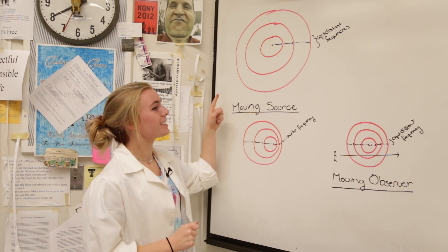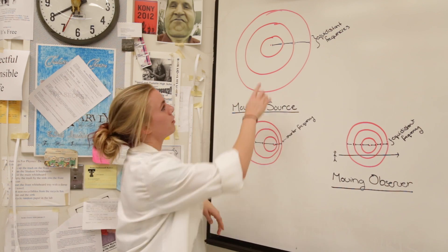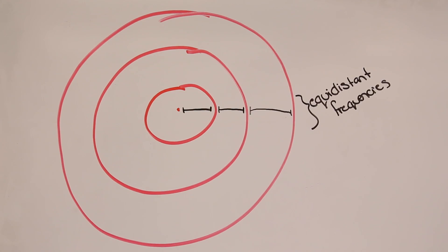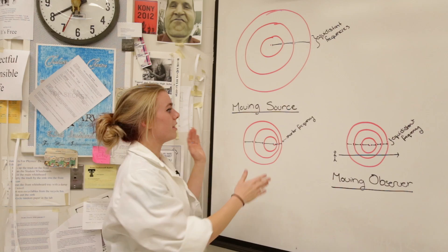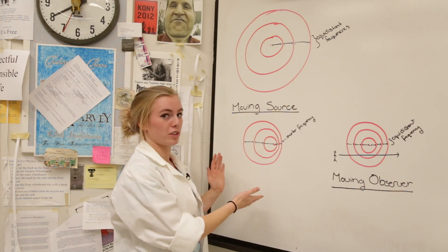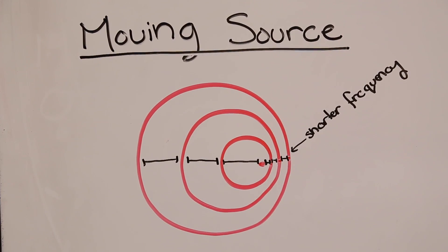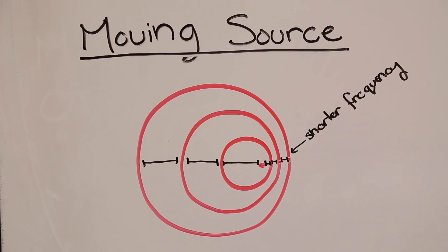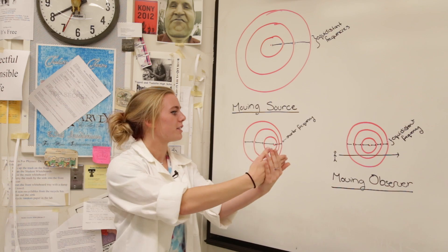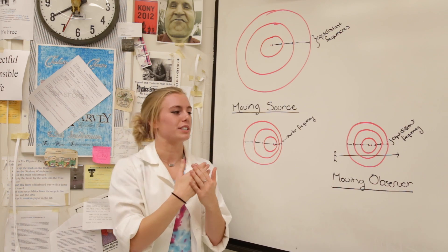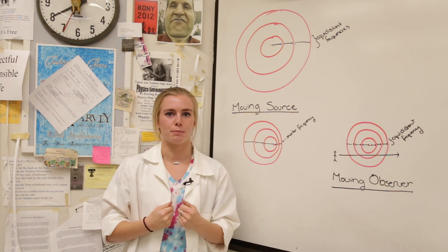This is a stationary wave. The wavelengths in between are all the same. This is a moving source. Moving source means that something is moving while emitting the sound. Because it is moving, there will be shorter wavelengths in the front and longer wavelengths in the back.